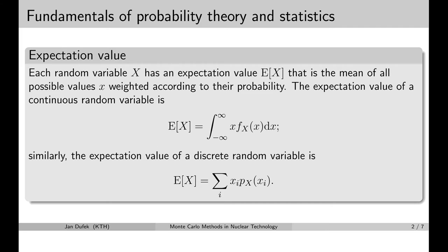Let me explain the concept of the expectation value on an example. Let's take the example of the distance between two collisions. We have a distance and then we have the probability density function. We already know that this random variable has the form of the exponential function. The probability of collision decreases exponentially with the distance. From this function it may look like the most probable site to see the next collision is at the point of the previous collision.